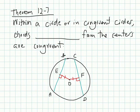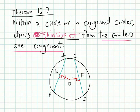All right, continuing along. Theorem 12.7, within a circle, chords equidistant from the centers are congruent. So if we have chords that have the same distance to the center, if the chords are the same distance from the center, then the chords are going to be congruent themselves. Meaning, the length of EB is going to be the same length as CD.